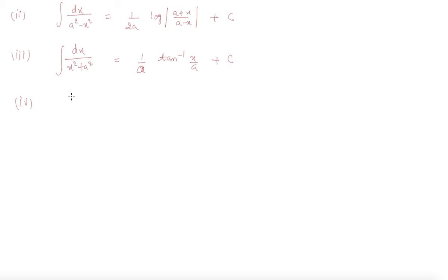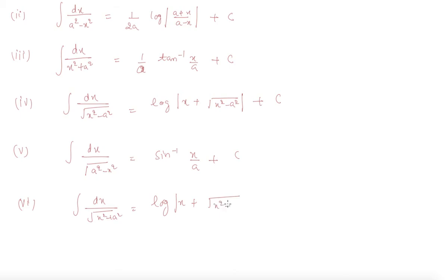Fourth is dx over square root of x squared minus a squared which is log of x plus square root of x squared minus a squared plus c. Fifth is dx over square root of a squared minus x squared which is sin inverse x by a plus c. And the sixth is dx over square root of x square plus a square for which the formula is log x plus square root of x square plus a square plus c.